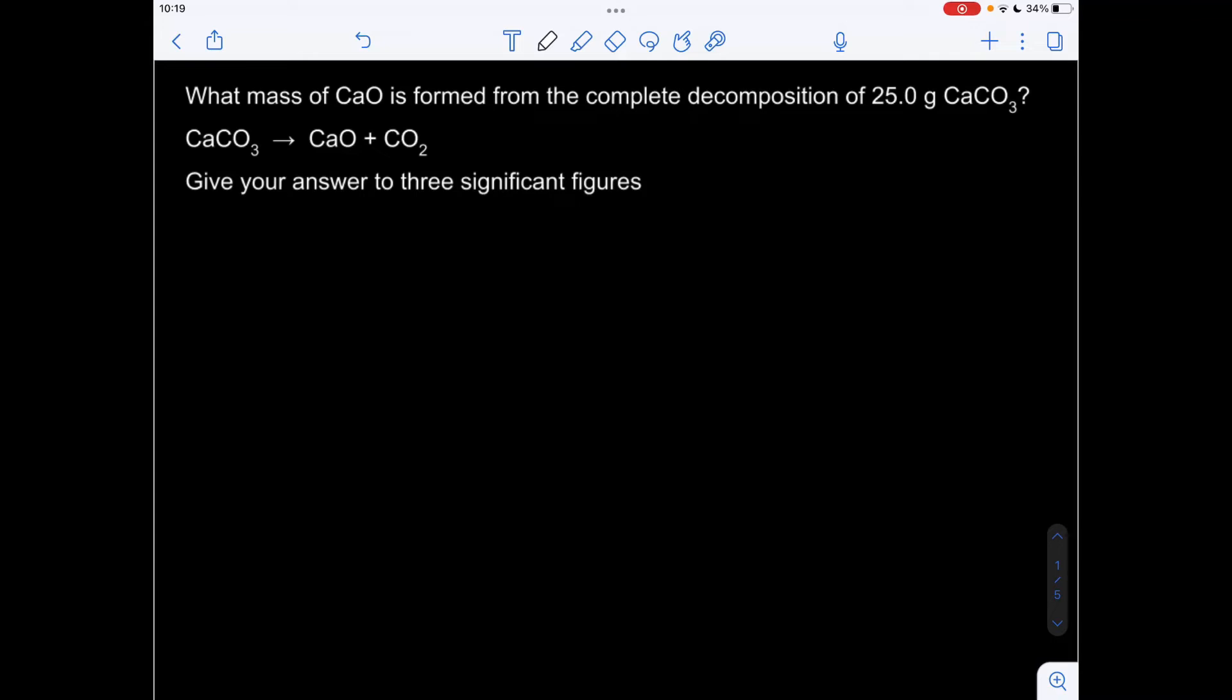Okay, so here's the first one. What mass of calcium oxide CaO is formed from the complete decomposition of 25 grams of calcium carbonate? And there's the equation, and we've got to give our answer to three significant figures. So the way I do this is I establish my known and unknown chemicals first. So we know the mass of the calcium carbonate, so that's my known chemical, and we want to find out the mass of calcium oxide, so that's my unknown chemical. So you'll see straight away, we're not interested at all about this carbon dioxide.